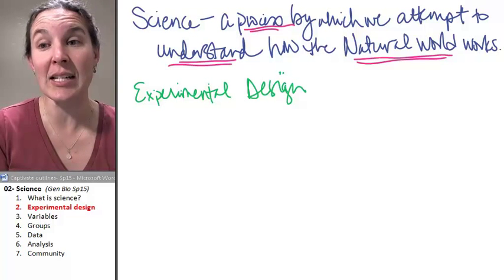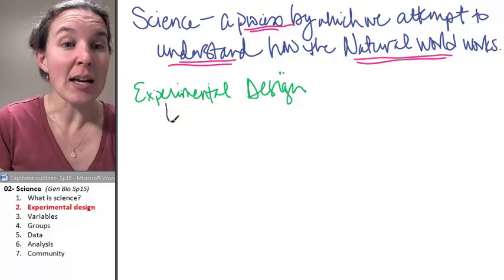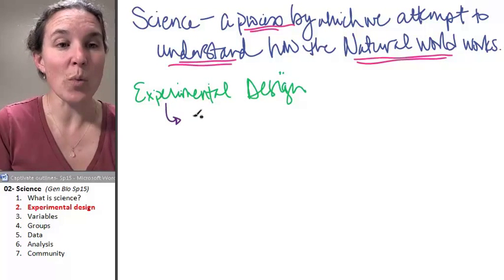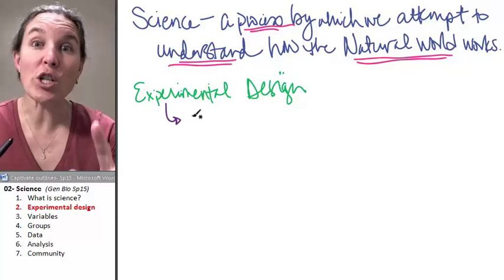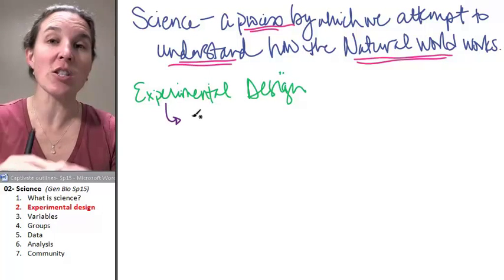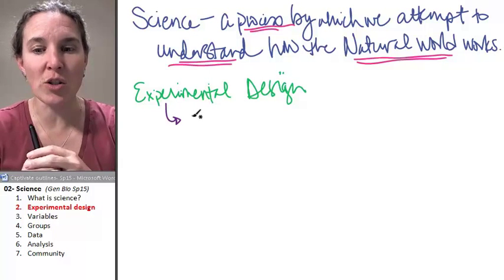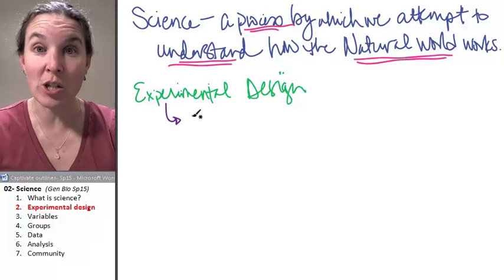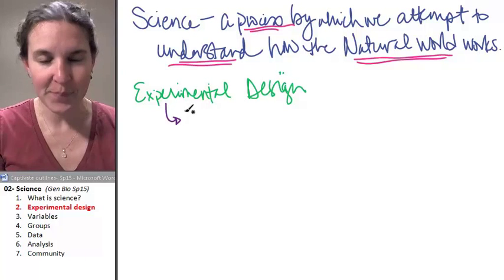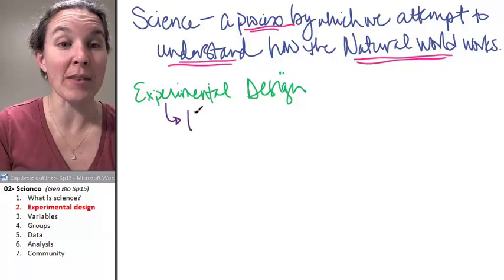The first thing that you're going to need to have is a hypothesis. Experimental design starts with—hold on. First of all, it starts with observations. It starts with questions. It starts with exploration, research, and then after doing all of that, then you come up with a hypothesis.